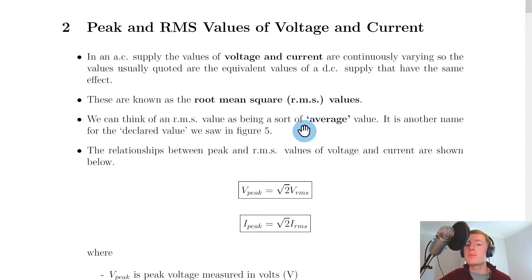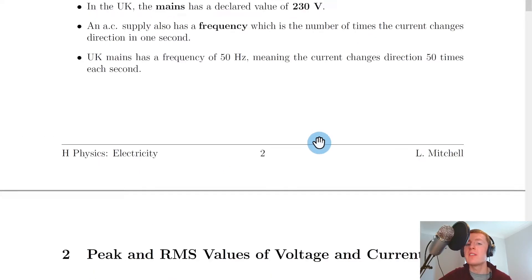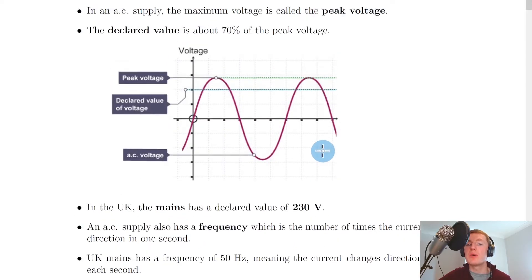We can think of an RMS value as being a sort of average value, and it's another name for the declared value that we saw in figure five, which was in a previous video. So this one here where we saw the declared value was about 70% of the peak voltage. So we're saying that is also called the RMS or root mean square value of the voltage.